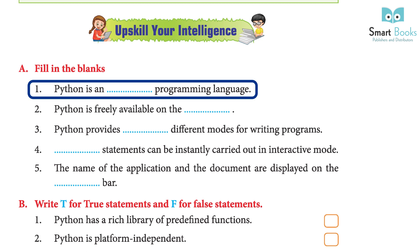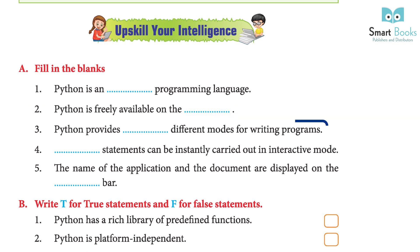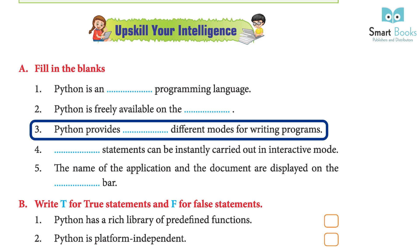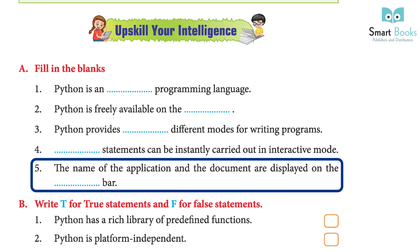Fill in the blanks: 1. Python is an open-source programming language. 2. Python is freely available on the Internet. 3. Python provides 2 different modes for writing programs. 4. Individual statements can be instantly carried out in interactive mode. 5. The name of the application and the document are displayed on the Title bar.